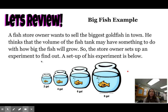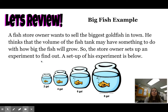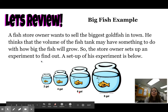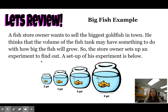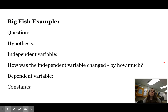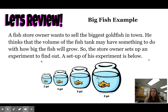Now let's go through the big fish example. A fish store owner wants to sell the biggest goldfish in town. He thinks the volume of the fish tank may have something to do with how big the fish will grow, so he sets up an experiment. He had four different fish tanks: two gallons, four gallons, six gallons, and eight gallons. Knowing this, identify: what was his scientific question, a hypothesis, the independent variable and how it was changed, the dependent variable, and some constants. Pause the video and go back to the slide as needed.